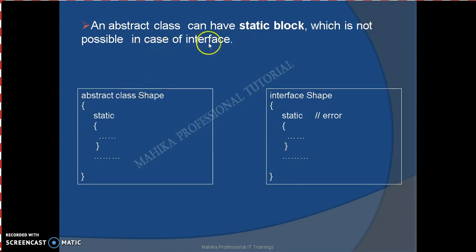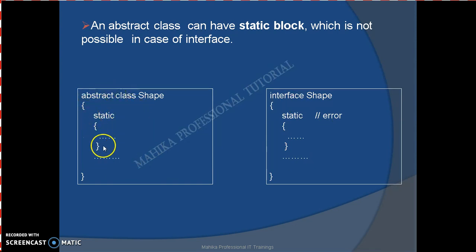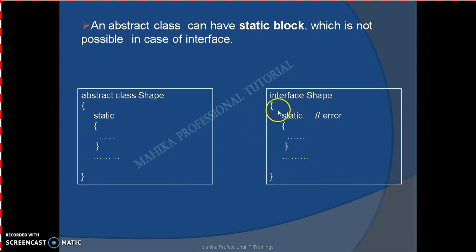The next difference is that an abstract class can have a static block, which is not possible in case of interface. We can have a static block in an abstract class, but we cannot have a static block in an interface. Basically, a static block is used to initialize static members of a class. In an interface, by default all data members are public, static, and final, so they are initialized at the time of declaration itself. Therefore a static block is not required, and we cannot have a static block in an interface, whereas in an abstract class we can.